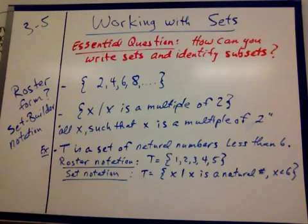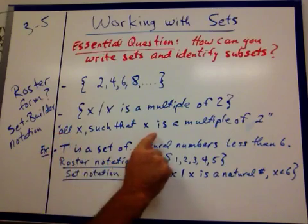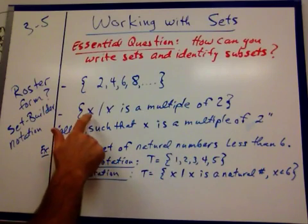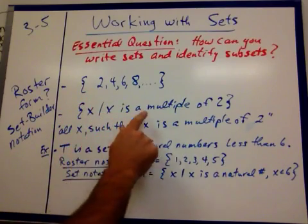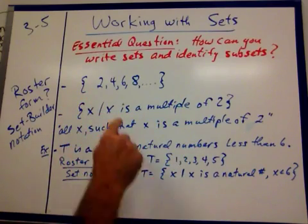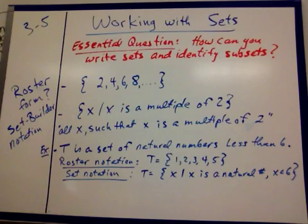Set builder notation, this is kind of a shorthand way of writing this. As you can see, are all even numbers, 2, 4, 6, 8, dot, dot, dot, and so on. Another way of writing it, and this is how you would say it right underneath here, we're talking about all x, such that, that's what that line stands for, x is a multiple of 2. That's another way of writing out that roster form. All x, such that x is a multiple of 2.